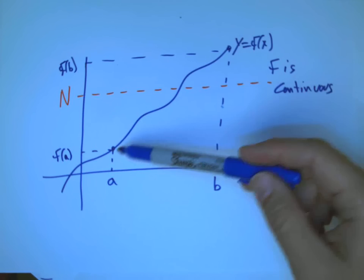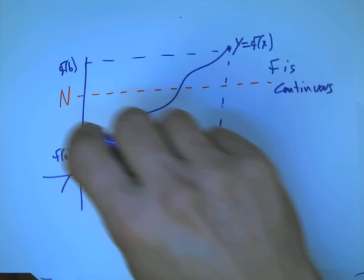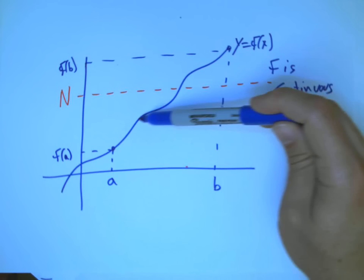Similarly, if I started out above and ended up below, I would have to cross as well. It's a very sort of geometrically obvious fact about a function.